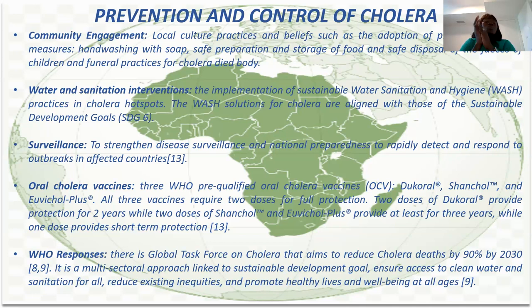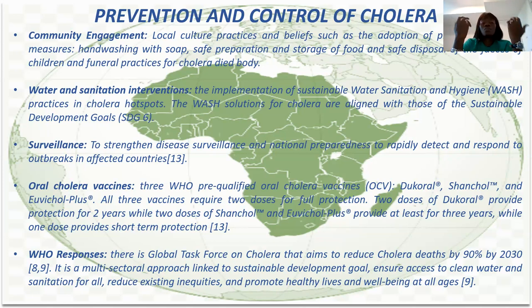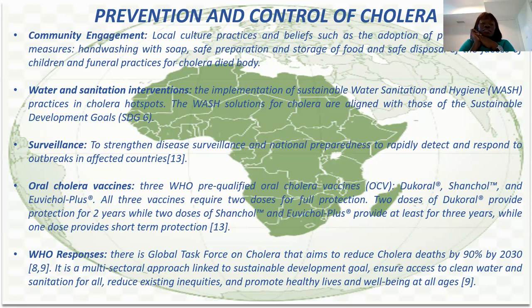Surveillance is another intervention — disease surveillance helps prepare for and respond to any outbreak in an affected area. For example, when there is an outbreak in one place, neighboring areas will be prepared in case an outbreak spreads. There is also an oral cholera vaccine. WHO has pre-qualified three types of vaccines. Two doses are required for full protection, lasting two years, while one dose protects for at least three years — and that single dose is enough to protect travelers visiting outbreak areas within a short period of time.